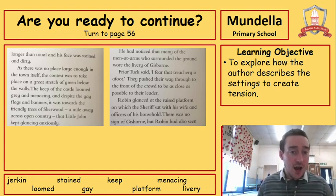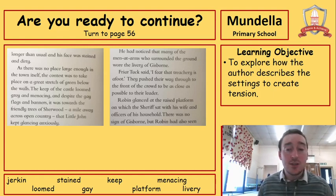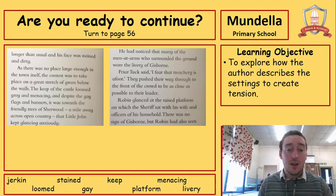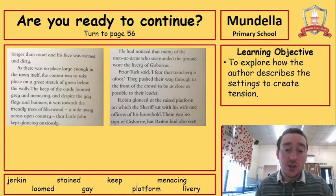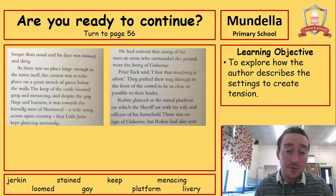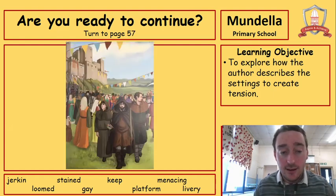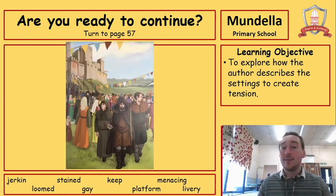Friar Tuck said, I fear that treachery is afoot. They pushed their way through to the front of the crowd to be as close as possible to their leader. Robin glanced at the raised platform on which the sheriff sat with his wife and officers of his household. There was no sign of Gisborne, but Robin had also seen... Oh, I wonder who he's going to see — you'll have to wait for that bit!